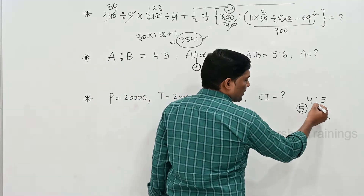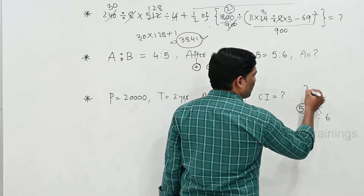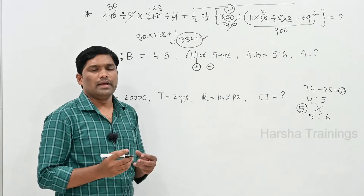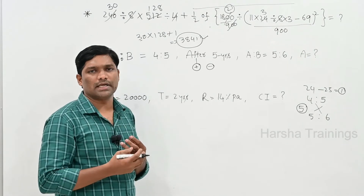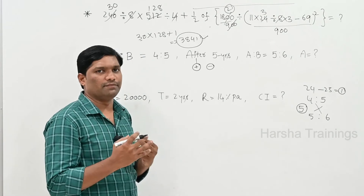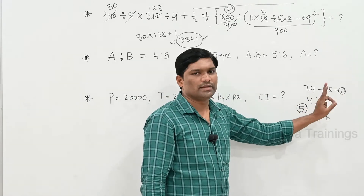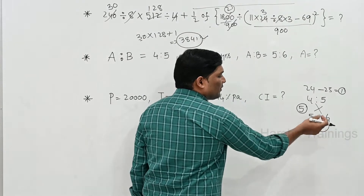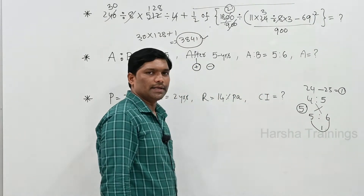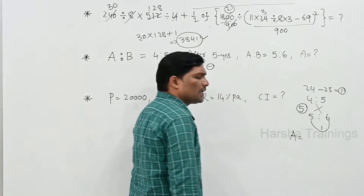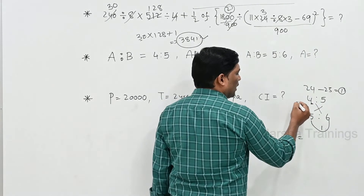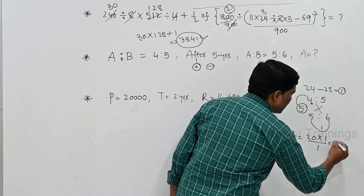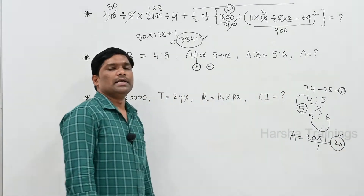Look at the screen — first step: cross multiplication. 6 times 4 is 24, 5 times 5 is 25. The difference is 1. Second step: check the second ratio difference — 5 to 6 has a difference of 1. Third step: A has 4 parts, after 5 years: 5 times 4 equals 20, divided by step 2 difference (1) equals 20 years.